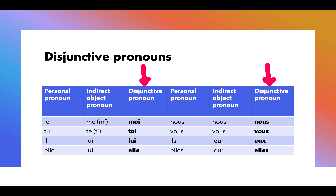Disjunctive pronouns, if you study the chart here, have a few things in common with indirect object pronouns. Notice that no matter what kind of pronoun you're talking about, nous and vous are always nous and vous. That will never change.